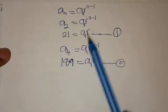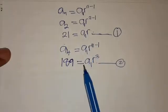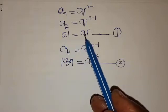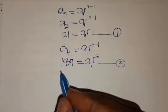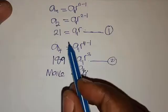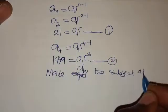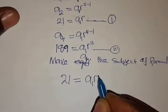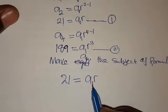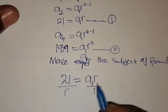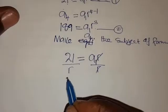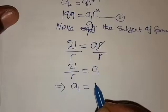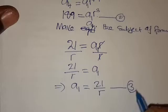Now that we have two equations, we are going to solve them simultaneously using the substitution method. We make A1 in equation 1 the subject of the formula. Equation 1 is 21 = A1 × R. Dividing both sides by R, we get A1 = 21 over R. We call this equation 3.